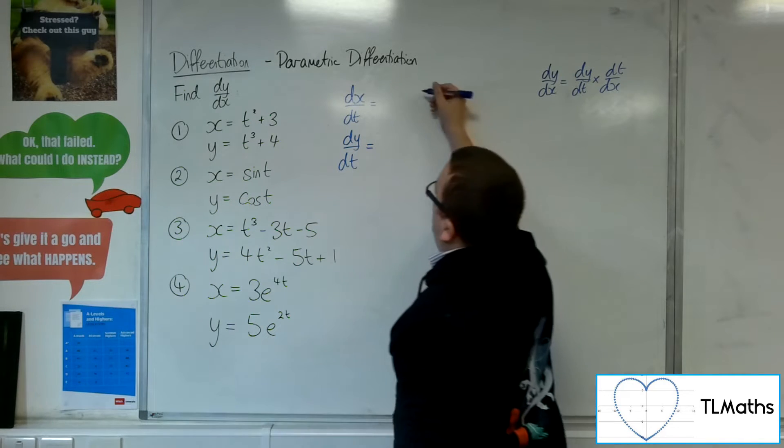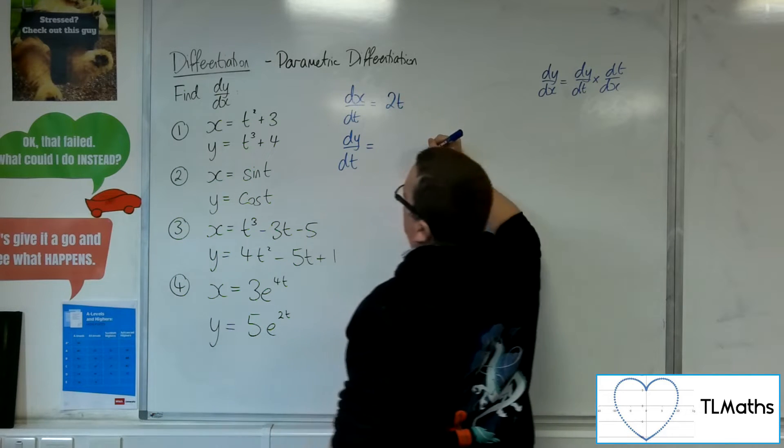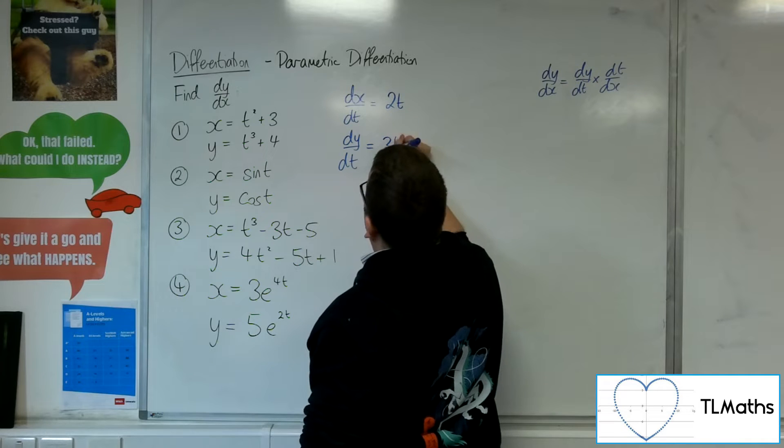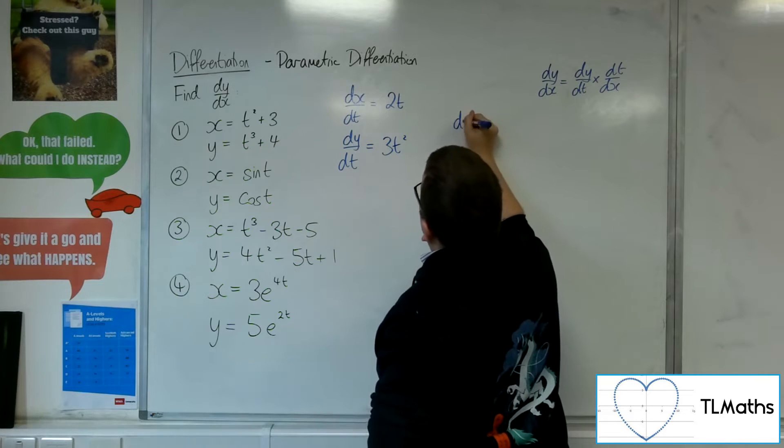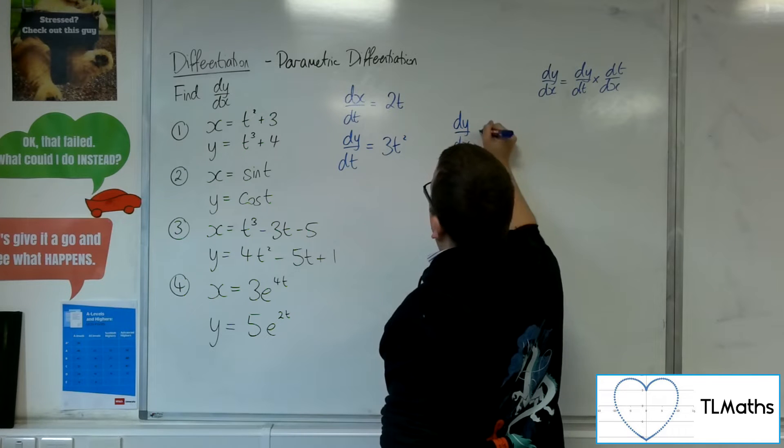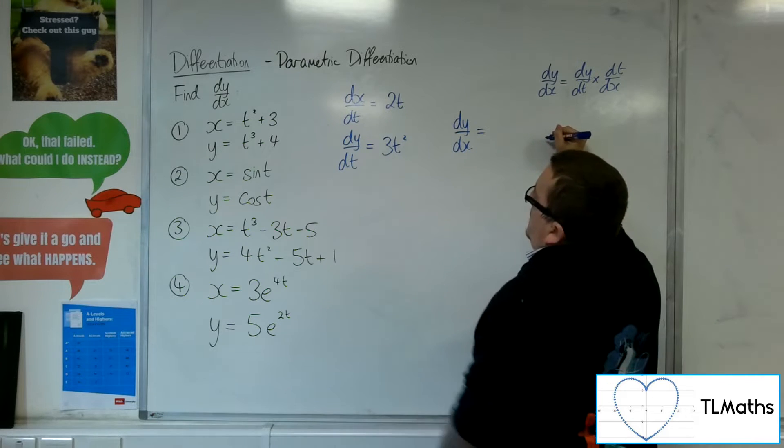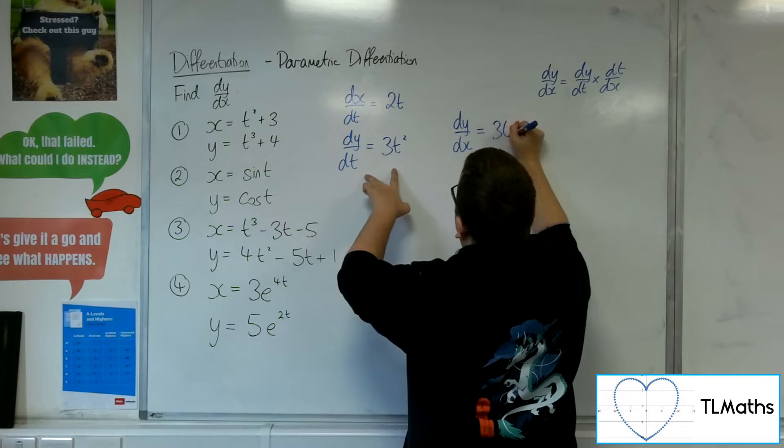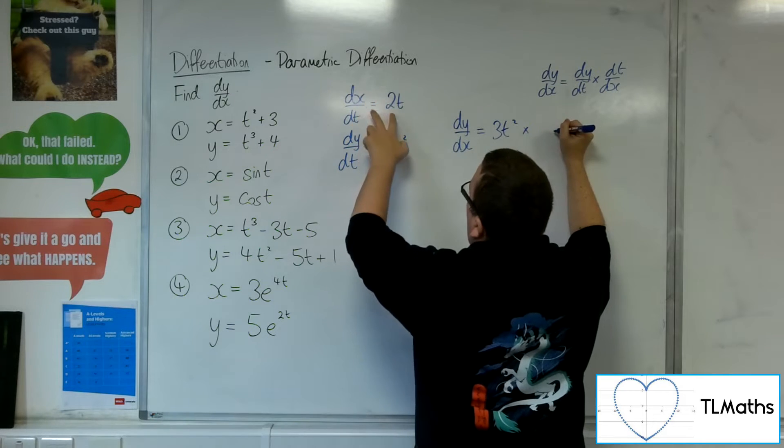So dx by dt is 2t and dy by dt is 3t squared. So dy by dx is going to be dy by dt times by dt by dx, which is 1 over 2t.